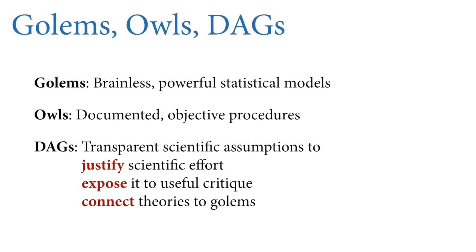Let me summarize this, the three critters we're going to see over and over again in the course. First, golems, my metaphor for the brainless, powerful statistical models that we rely upon. We need golems, but you've got to design the right golem and deploy it in a very constrained set of circumstances so it doesn't do damage. Second are owls. We're going to draw the owls, and what I mean by this is documented objective procedures and working in a way that gives us confidence in our work and justifies confidence of others. Third, DAGs, directed acyclic graphs, a way to make transparent our scientific assumptions so we can justify the scientific effort, expose it to critique, and directly connect scientific theories to the powerful golems we're going to use to extract associations from data.